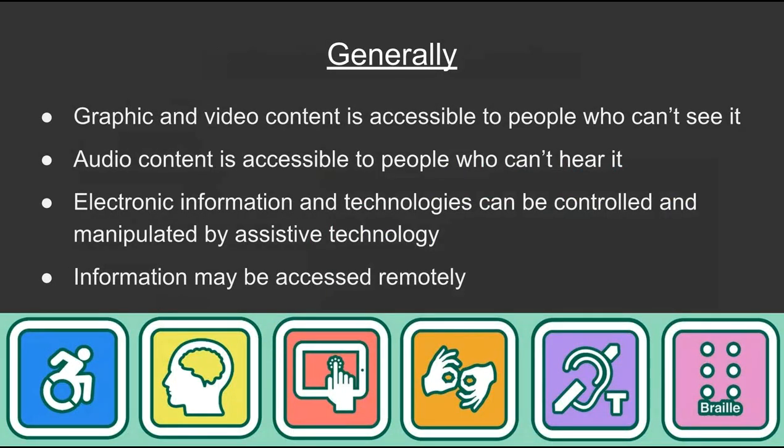What this all means is that graphic and video content is accessible to people who can't see it, and audio content is accessible to people who can't hear it. Websites can be controlled and manipulated by assistive technology, meaning it doesn't lock users out. And information may be accessed remotely at home — not everyone is on your campus.